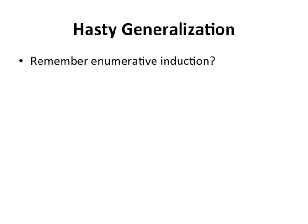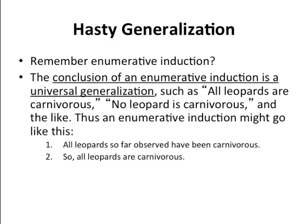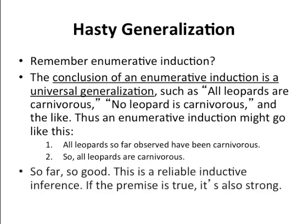Hasty generalization is the first fallacy we'll encounter. You will remember enumerative induction from our last unit. The conclusion of an enumerative induction is always a universal generalization, such as 'all leopards are carnivores' or 'no leopard is a carnivore.' An argument using enumerative induction might go: Premise 1 — all leopards so far observed have been carnivorous; Conclusion — all leopards are carnivorous. If the premises are true, it's a strong inductive inference, meaning that even though it's non-conclusive, the evidence is sufficient to accept the conclusion, although it's always possible for the premises to be true and the conclusion to be false.